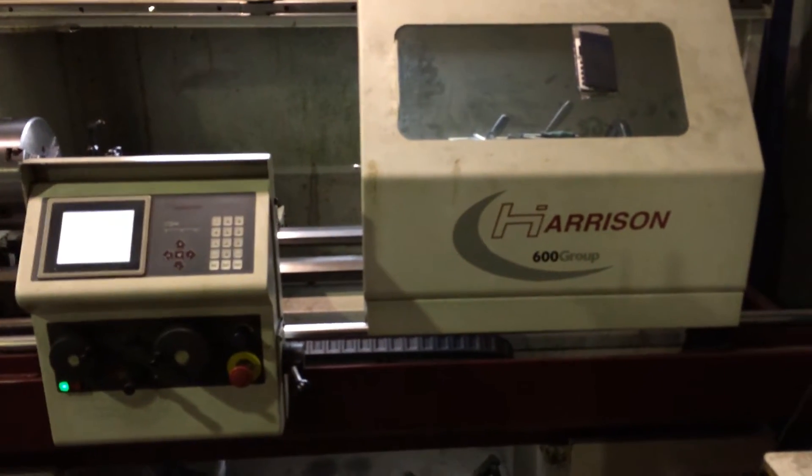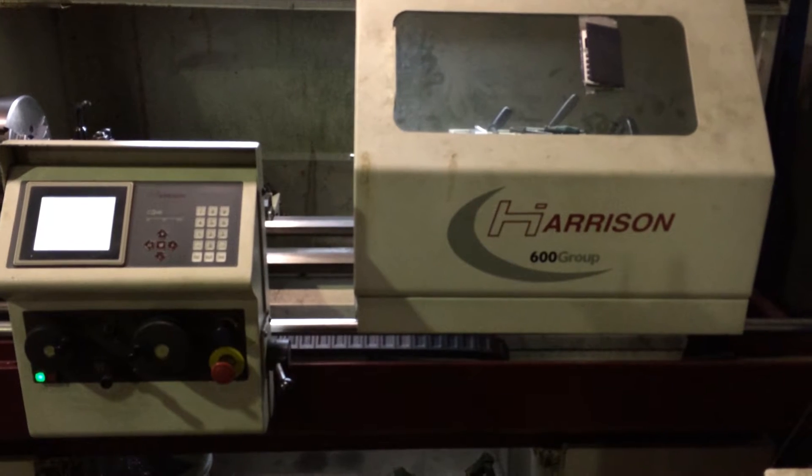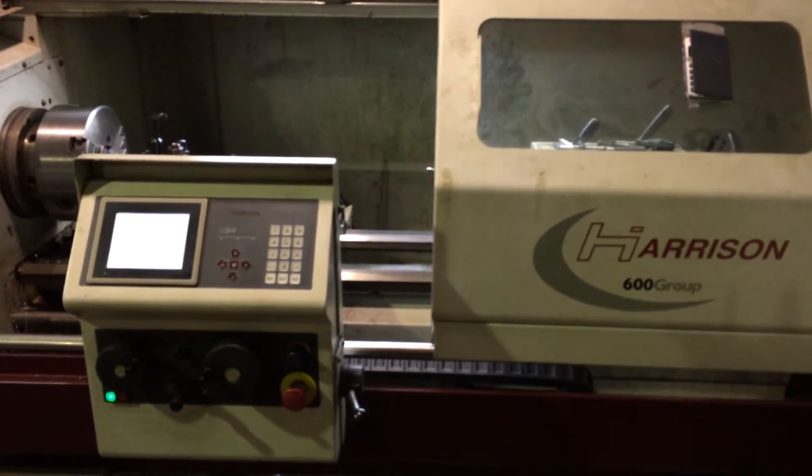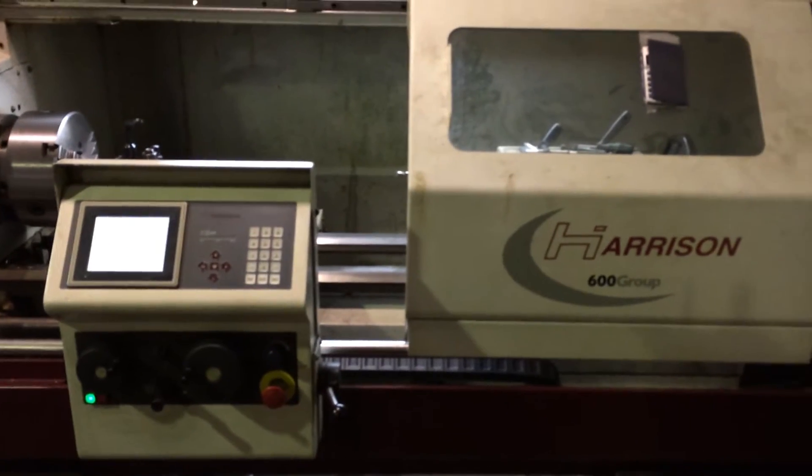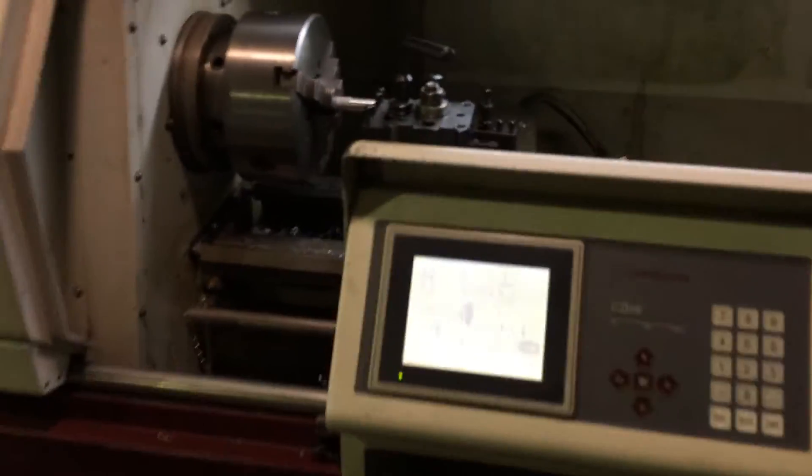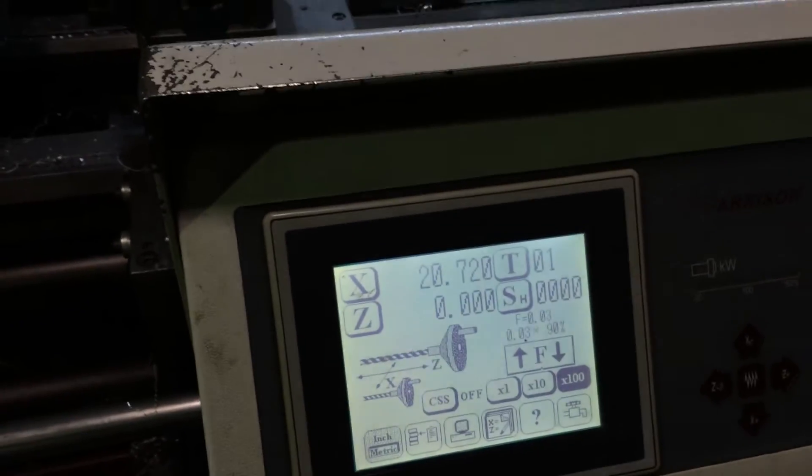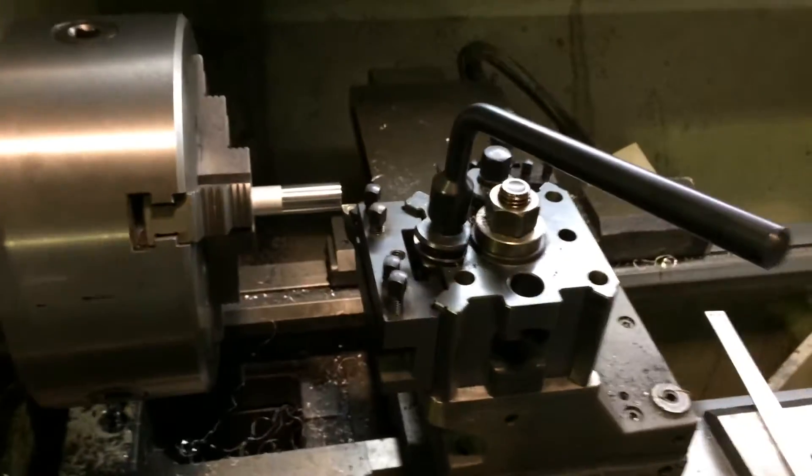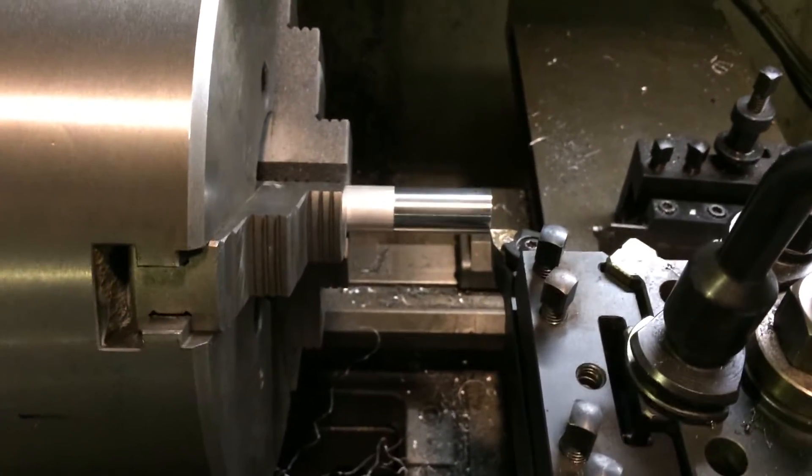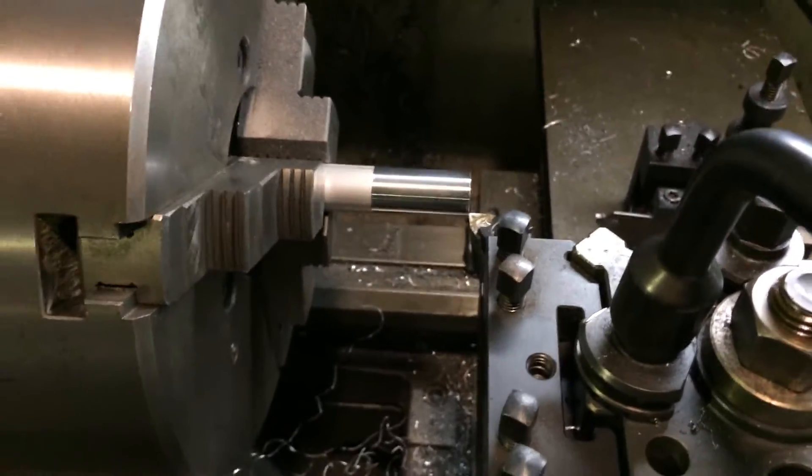Okay, just going to do a little tutorial on the Harrison Alpha 600 CNC lathe because there's not a lot of info out there. I've struggled when I bought my machine to find info on how to do some simple operations, but it is quite simple. We'll have a quick look at doing just a simple parallel turning job. I've just got some aluminum stock in a little three-jaw chuck.